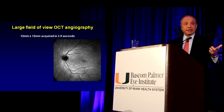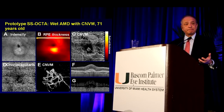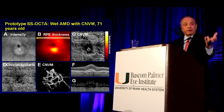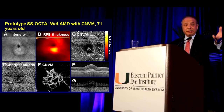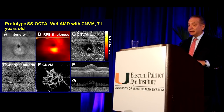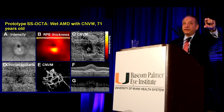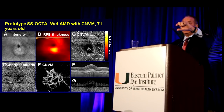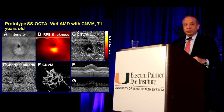We're now looking at OCT angiography, which will be talked about today. We now have commercial OCT angiography. This is one of the first cases we studied two years ago of a patient with a choroidal neovascular membrane. We now believe — and Dr. Rosenfeld will talk about this — the use of OCT angiography to replace conventional angiography in diabetes and macular degeneration. Thank you very much for your attention.